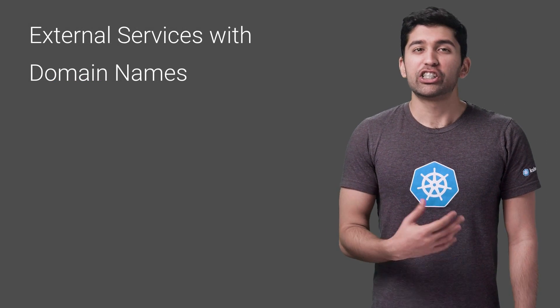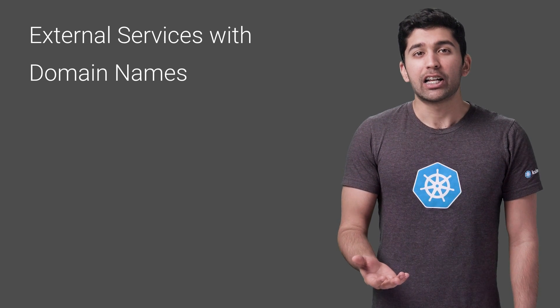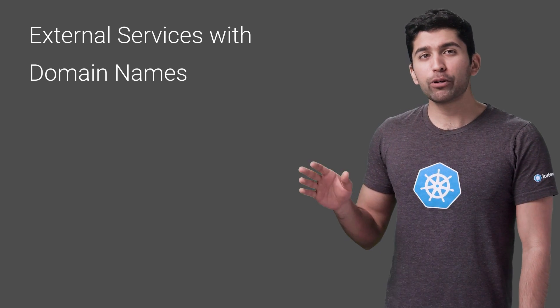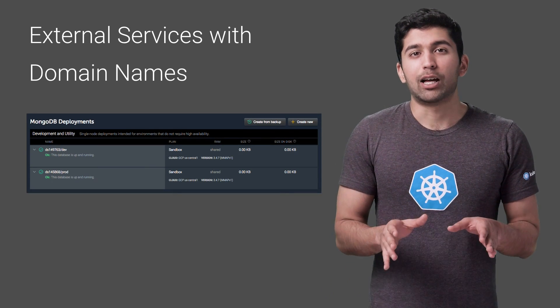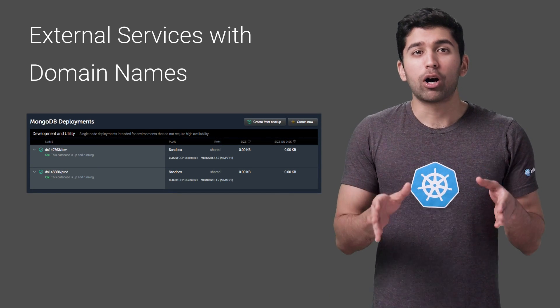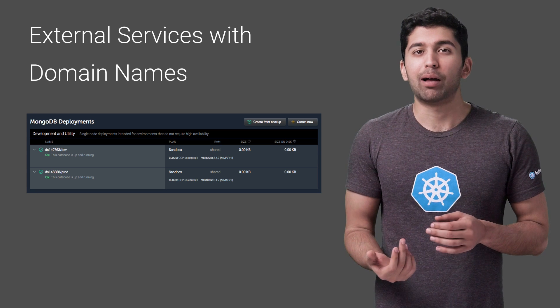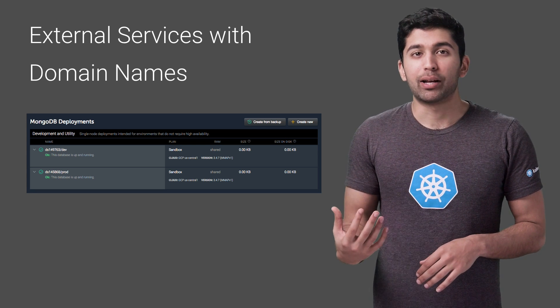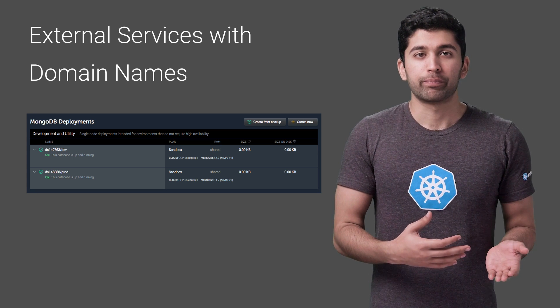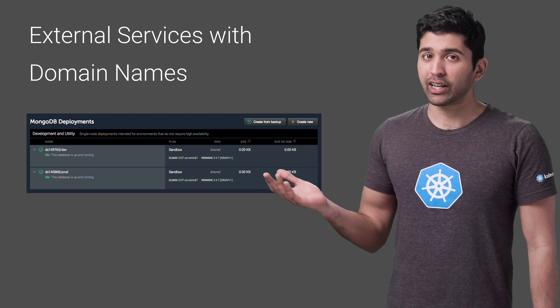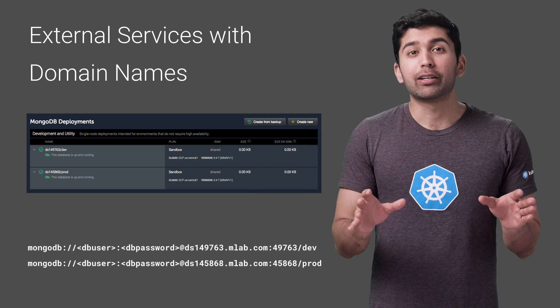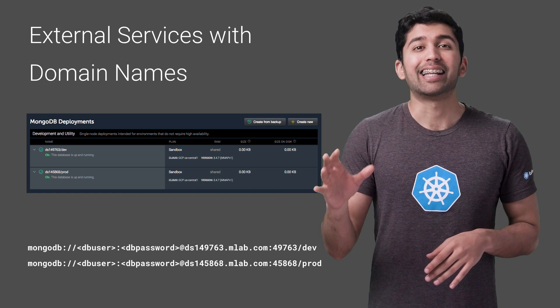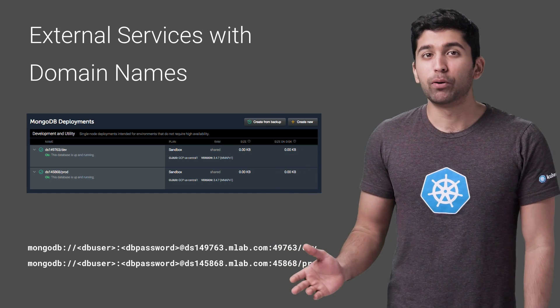If you're using a hosted database from a third party, chances are they give you a URI that you can connect to. If they give you an IP address, you can just use the previous method. In this example, I have two MongoDB databases hosted on MLAB — one is my dev database and the other is production. The connection strings for these databases are as follows. MLAB gives you a dynamic URL and a dynamic port, and you can see that they're both different.